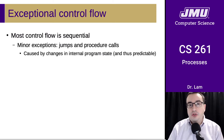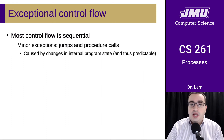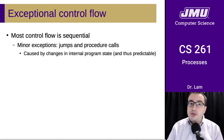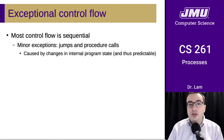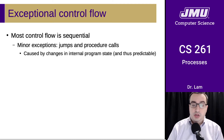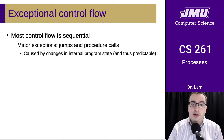Most control flow is sequential — you always go to the next instruction afterwards. That's what happens most of the time while code is executing. We've seen minor exceptions to this in the form of jumps and procedure calls, but these are caused by changes in the internal program state, so they're relatively predictable from the perspective of the program writer.